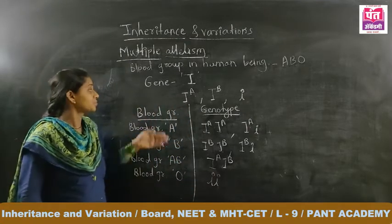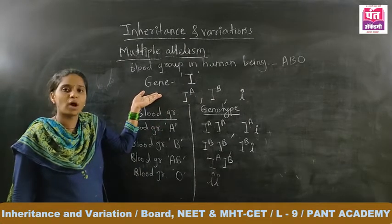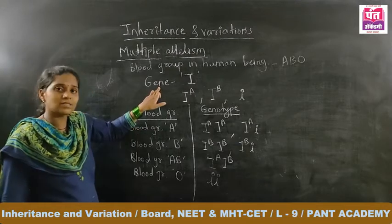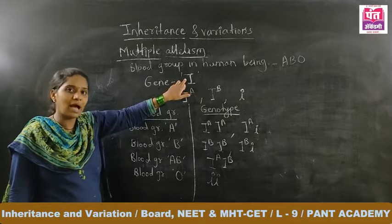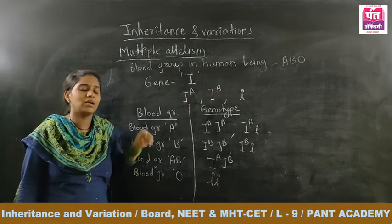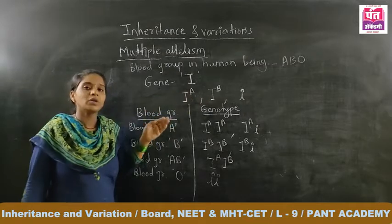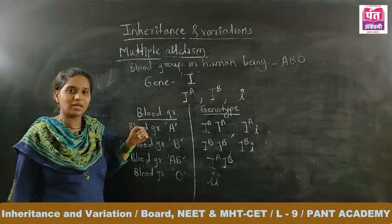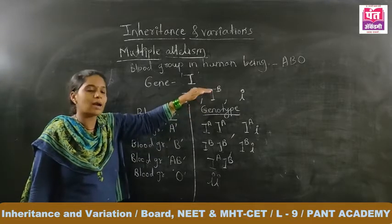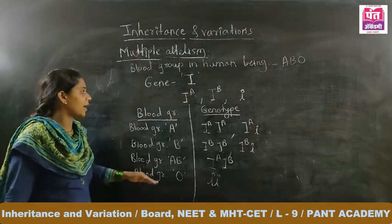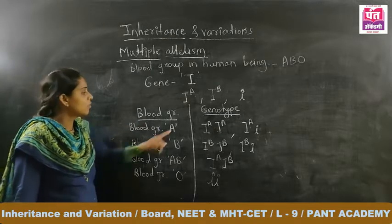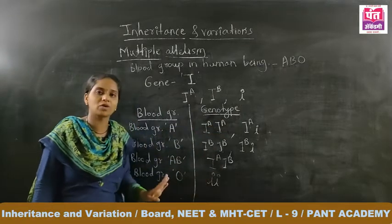For blood group O, the genotype is small i, small i. In this way, blood group in human beings also shows multiple allelism. The blood group is controlled by single gene capital I, which undergoes variations and mutations to form a series of multiple alleles. Iᴬ and Iᴮ show co-dominance, while both are totally dominant over small i. So there are four blood groups denoted by six different genotypes.